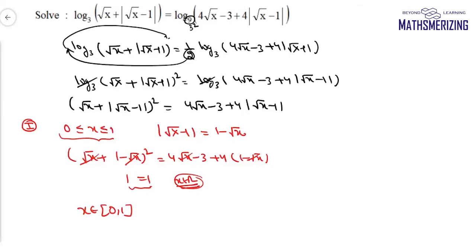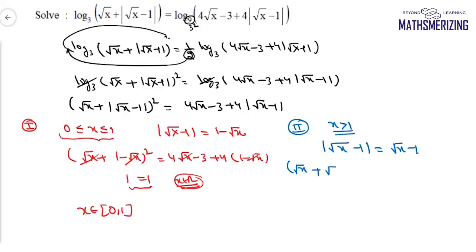For Case 2, when x is greater than 1, |√x − 1| = √x − 1. So I write (√x + √x − 1)² = 4√x − 3 + 4(√x − 1), which simplifies to (2√x − 1)² = 8√x − 7.